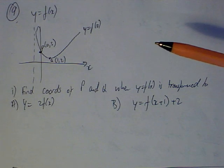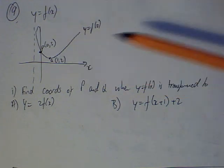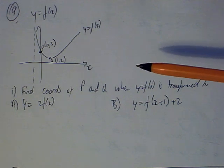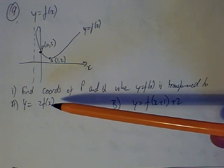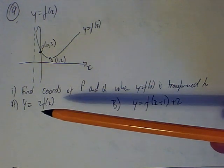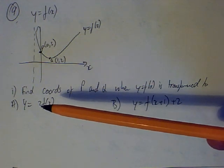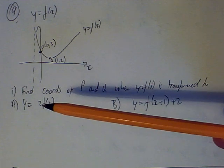So, the first question, or first part anyway, of question 9 is all to do with transformations of the graph. You've got two coordinates given on the graph, and you've got to work out where those coordinates would be under the two transformations. First of all, with A, it's y equals 2 f of x.